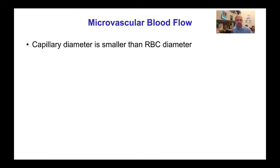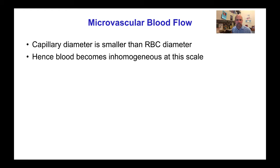Capillary diameter is actually smaller than red blood cell diameter in the smallest capillaries, and hence at this scale blood becomes inhomogeneous. The size of the red blood cells relative to the scale of interest is large.